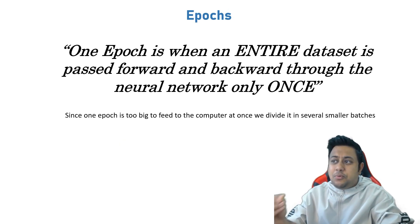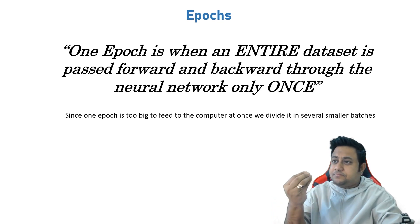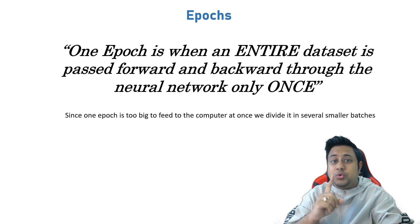Epoch is simply when an entire dataset is passed forward and backward through the neural network only once. Since one epoch is too big to feed to the computer at once, we divide it in smaller batches.